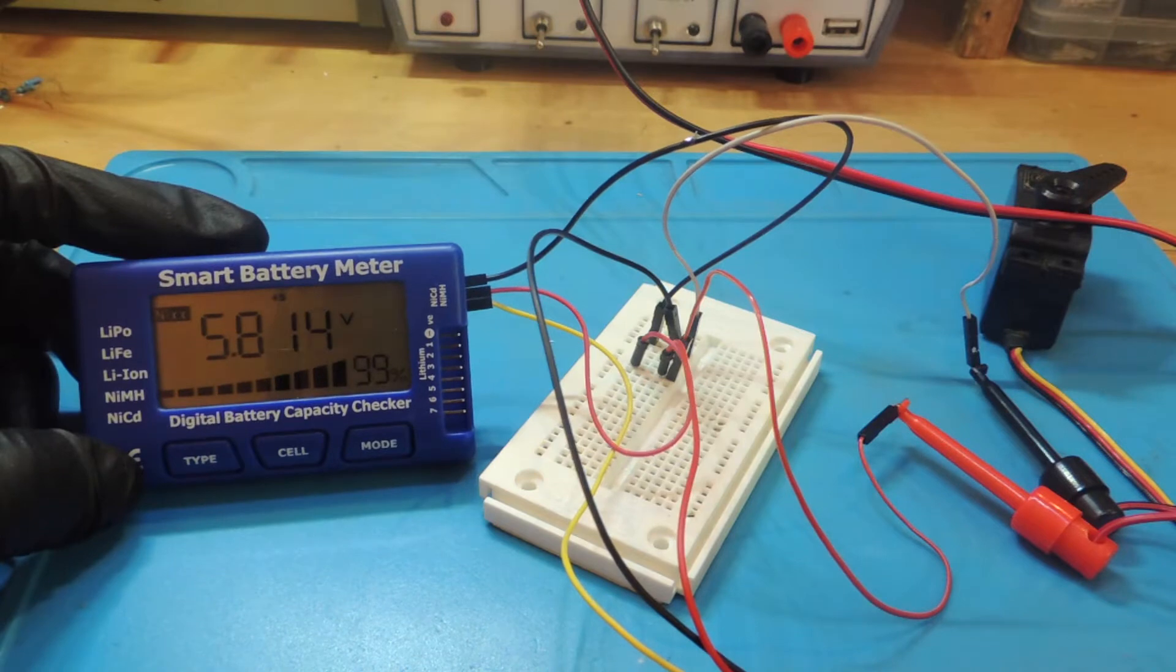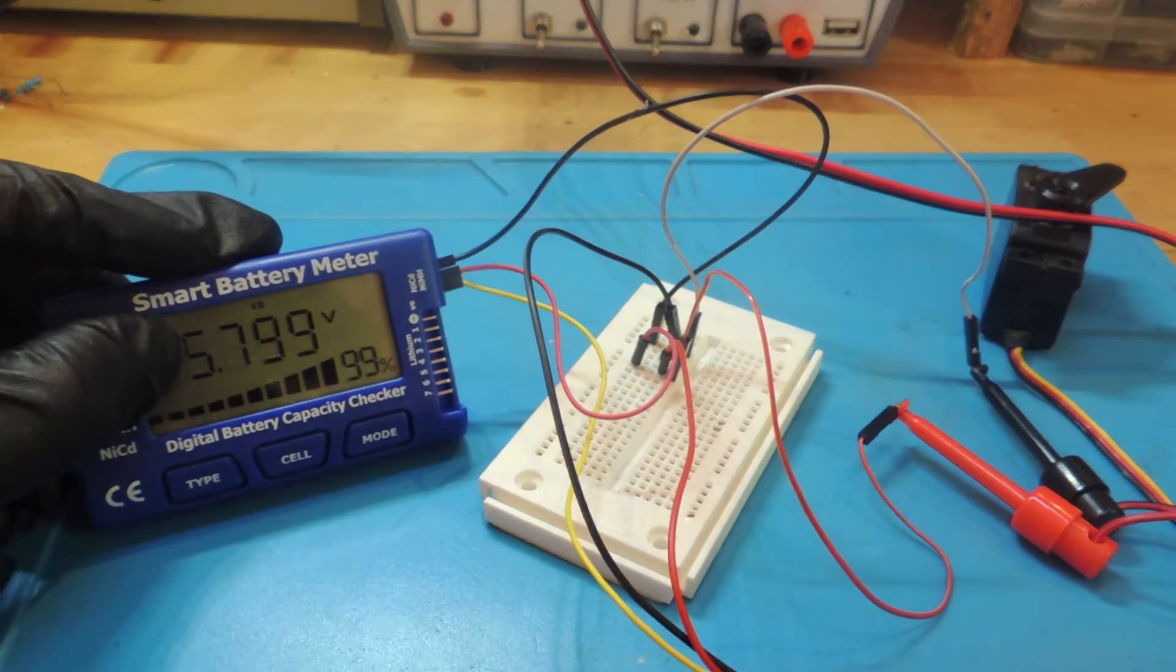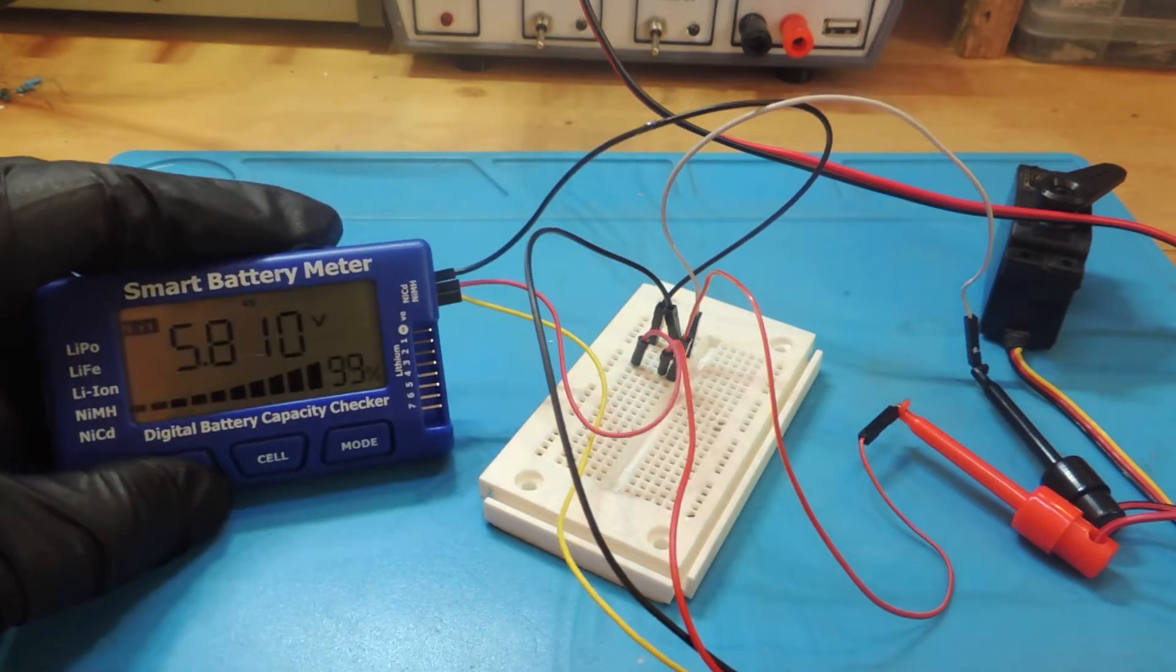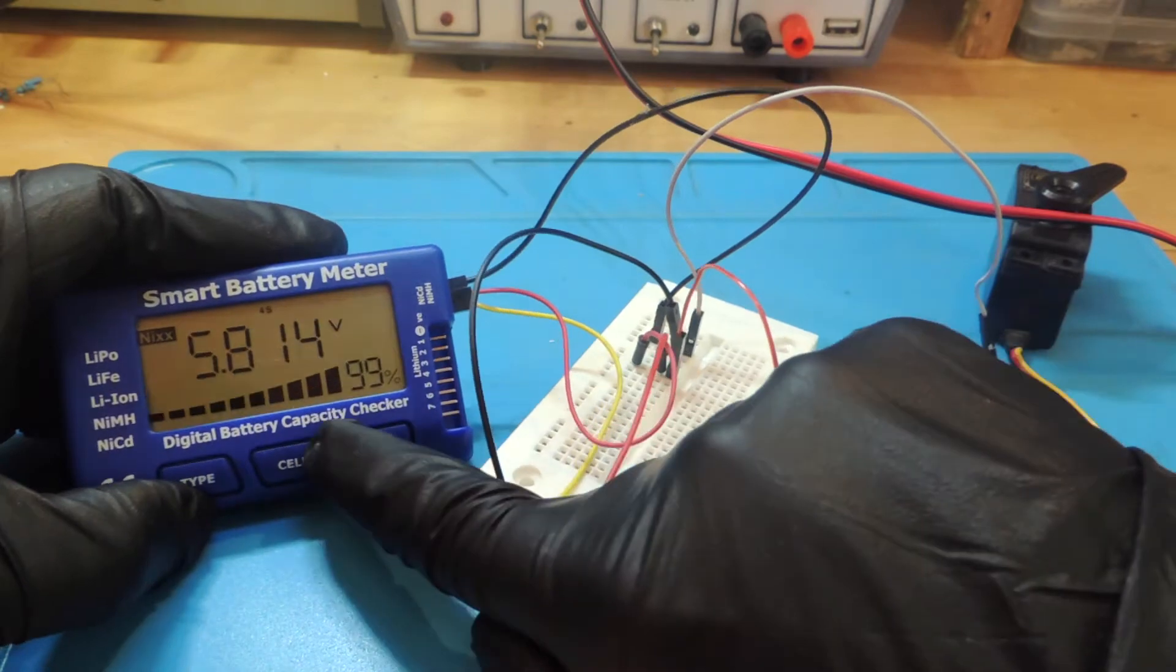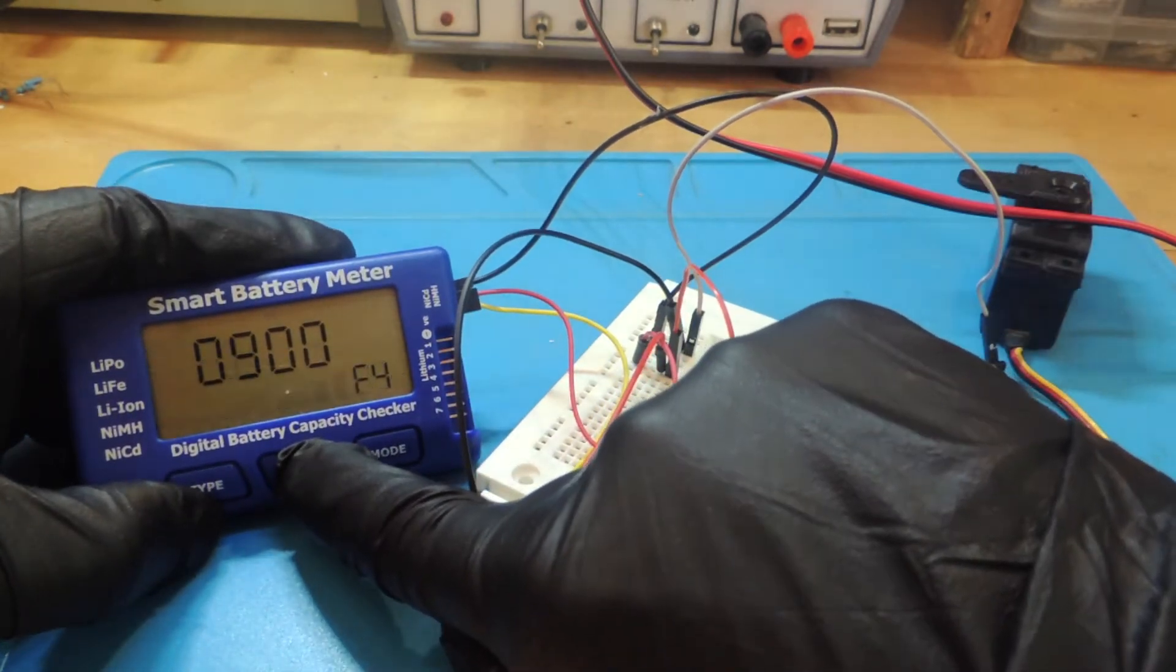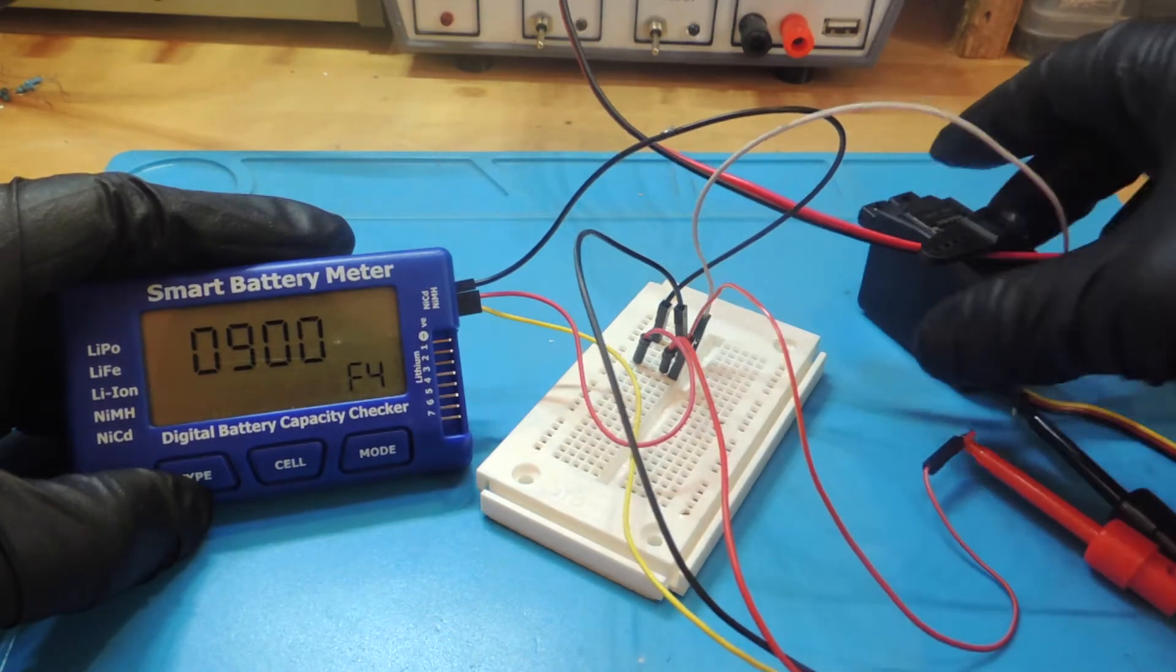When we power up our battery meter, it just shows you the voltage comes from the power supply. To access the servo test function, we have to press the cell button and hold for a couple seconds. So now we are able to test our servo.